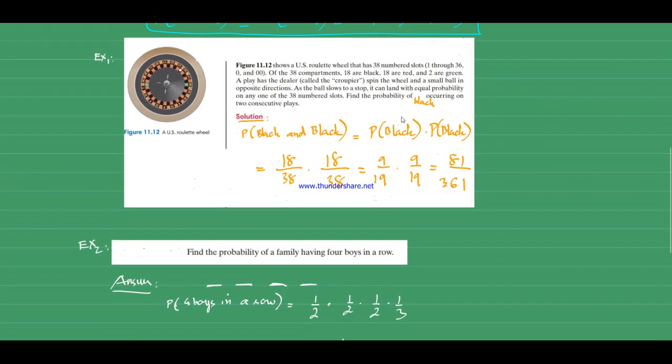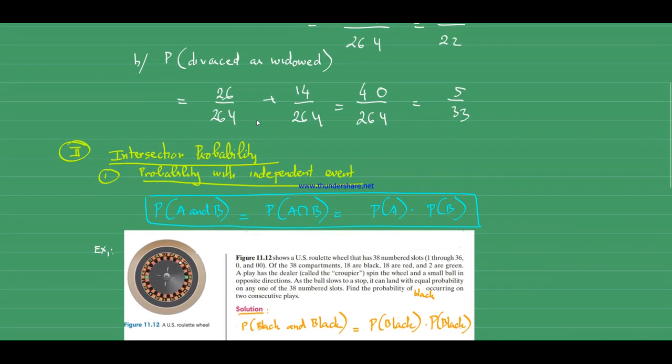Now the second type of intersection probability involves dependent events. Dependent event means the occurrence of the first event affects the probability of the second event. Let's jump into an example.